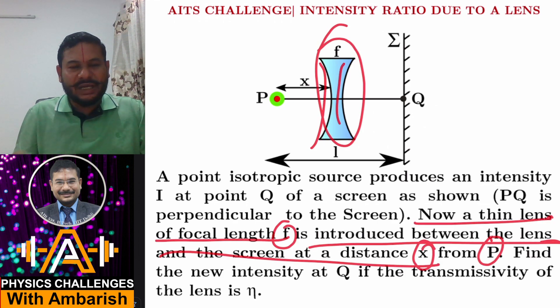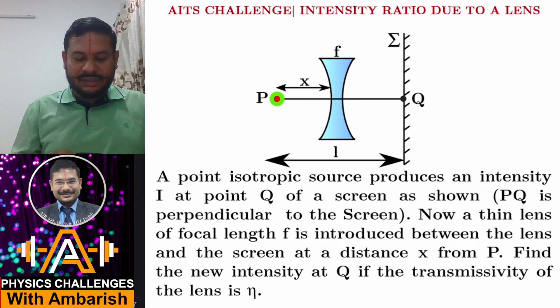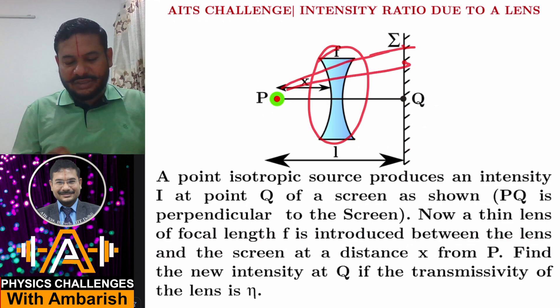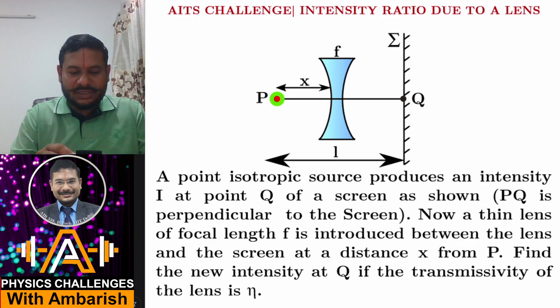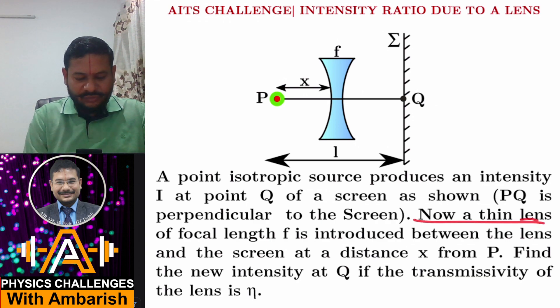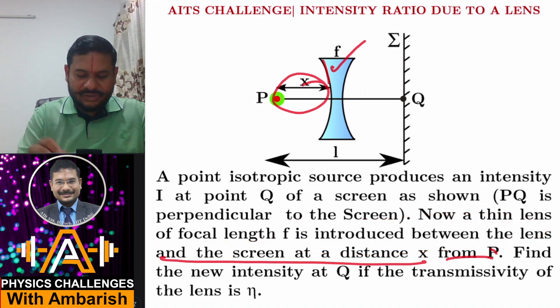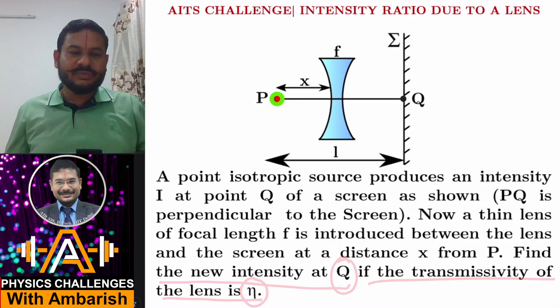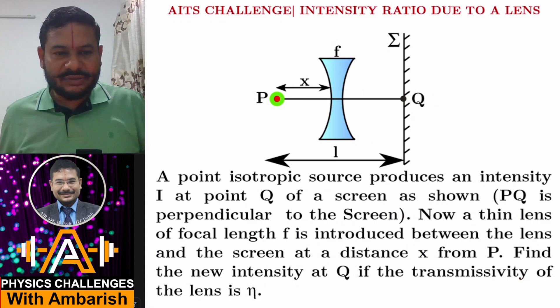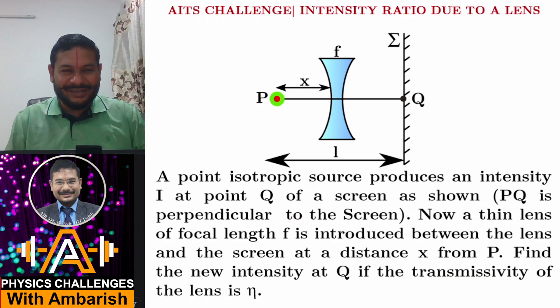Now a thin lens of focal length f is introduced between the lens and the screen at a distance x from P. It could be either a converging lens or a diverging lens, but you can assume the rays are still divergent after crossing this lens. The source has to be suitably placed with respect to the lens so rays don't start converging after crossing it, or for simplicity you might think in terms of a diverging lens. Find the new intensity at Q if the transmissivity of the lens is eta. Transmissivity means the fraction of light transmitted through the lens.